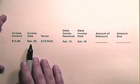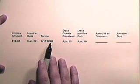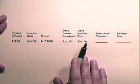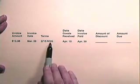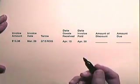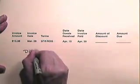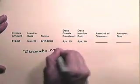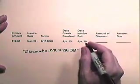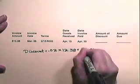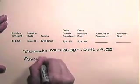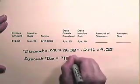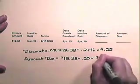In the next exercise, the invoice amount is $12.38, the invoice date is March 29th, terms are 2/15 receipt of goods, the goods were received April 15th, and the invoice was paid on April 30th. April 30th is within the discount period because it is 15 days after receipt of goods. So the discount is 2% of $12.38, which rounded to the nearest cent is 25 cents, making the amount due $12.38 minus $0.25, or $12.13.